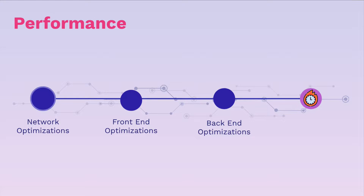The first part will be network optimizations. We're going to talk about how we can minimize our files and improve delivery of our application. And then we're going to learn about front-end optimizations, about the critical render path, how to improve it, so our website can load fast.